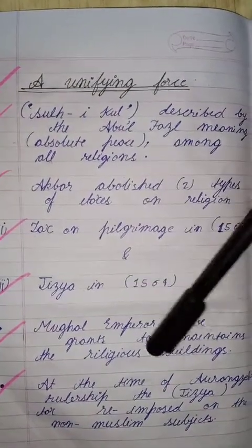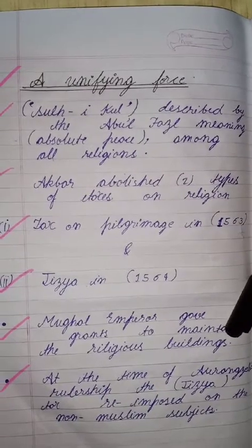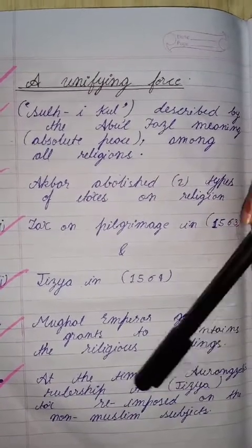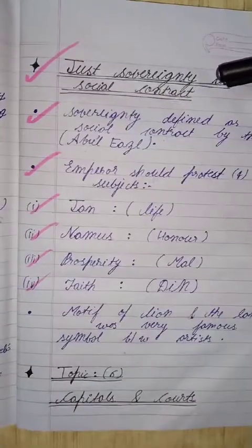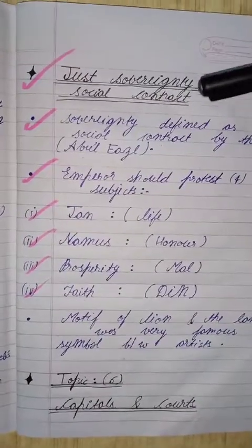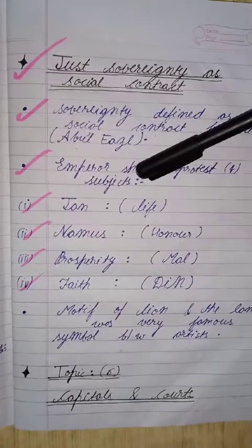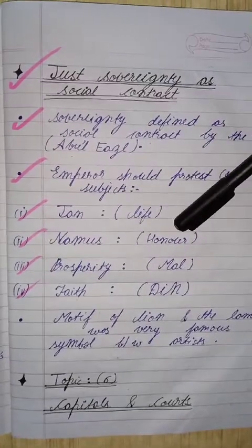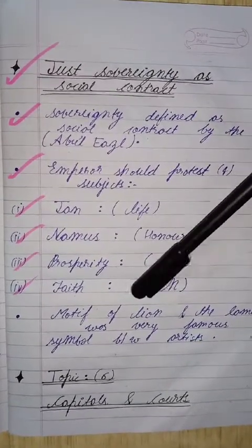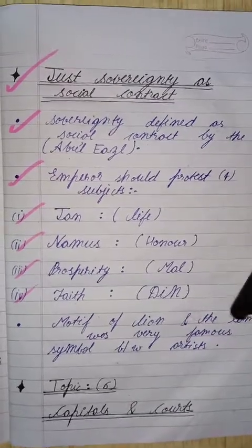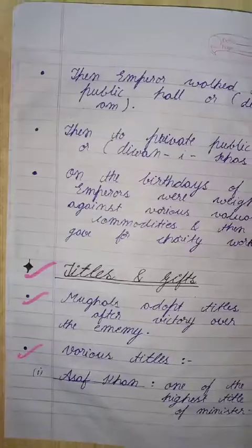The Mughal emperors gave grants to maintain religious buildings. However, at the time of Aurangzeb's rulership, the jazia tax was reimposed on non-Muslim subjects. Emperors were expected to protect four things for their subjects: life, honor, prosperity, and faith. The motifs of lion and sun were also very famous symbols among the artists.